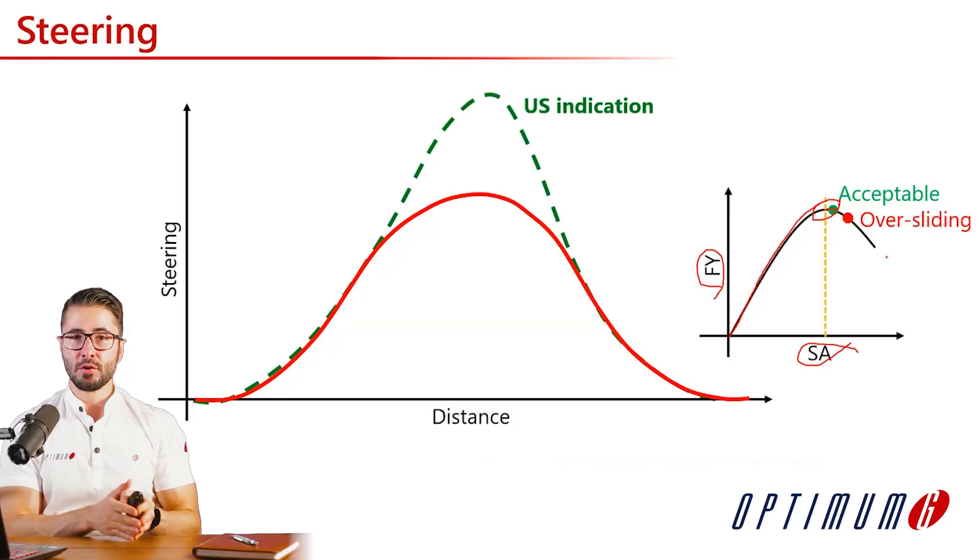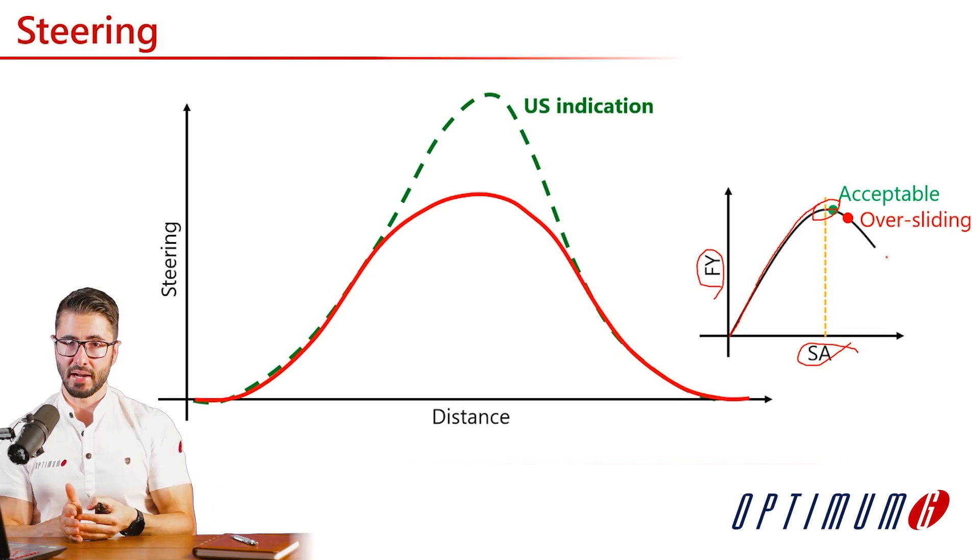Anything past the tire's peak can be very detrimental — this is over-sliding or over-driving. Sliding the tires more generates more temperature due to higher energy and also induces higher wear. A car that was slightly understeered, if the driver keeps sliding the front axle, becomes even more understeered — leading to even further steering and destroyed front tires. One exception: in very cold conditions, some over-driving to put more energy into the tires and get higher temperatures can actually help with grip.